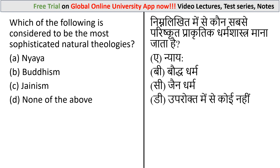Question: Which of the following is considered to be more sophisticated natural theology? Options: Nyaya — one of the six systems of Indian philosophy, important for its analysis of logic and epistemology; Buddhism — the word 'Buddha' means enlightenment, attained by utilizing morality, meditation and wisdom; and Jainism — an ancient religion from India that teaches that the way to liberation is to live a life of homelessness and renunciation. The correct answer is option A: Nyaya is considered to be more sophisticated natural theology.